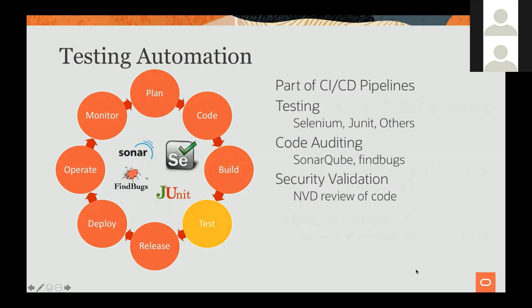Testing is another important part of your application lifecycle, and for us it's an integrated part of our CI/CD pipeline. You can have steps in your process that automate testing of your user interface using Selenium, automate the testing of your backend with JUnit and frameworks based on JUnit, and bring in other testing frameworks such as Mocha to test JavaScript code. Code auditing is another capability you can invoke as part of your CI/CD pipeline.